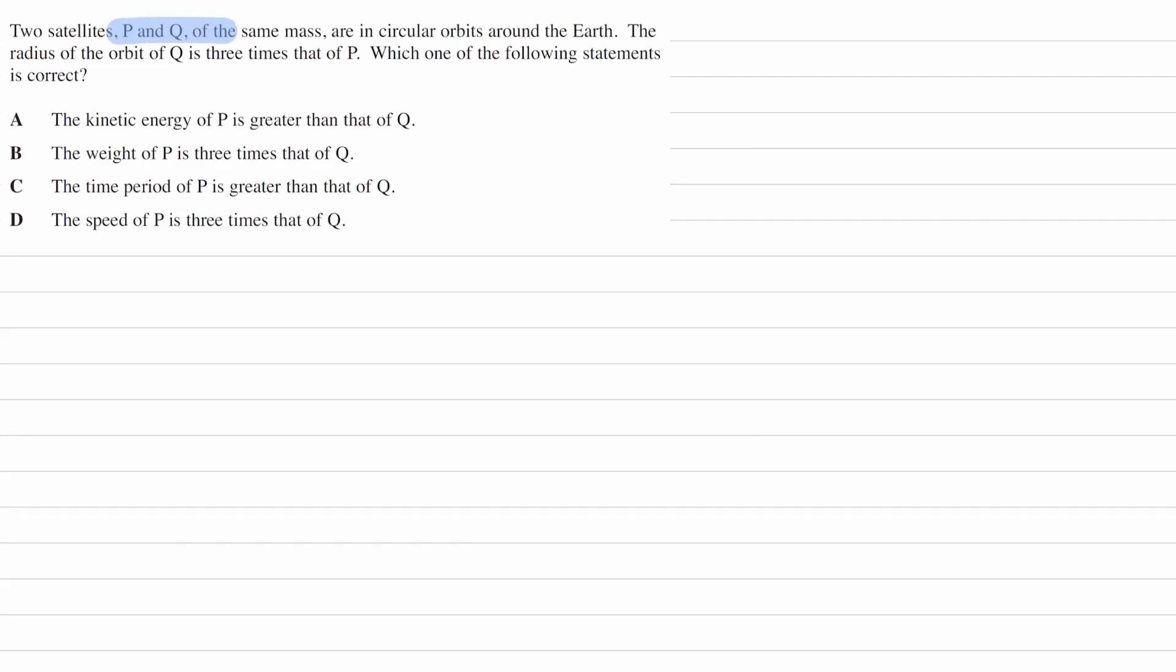Two satellites, P and Q, of the same mass are in circular orbits around the Earth. The radius of the orbit of Q is three times that of P. Which one of the following statements is correct?